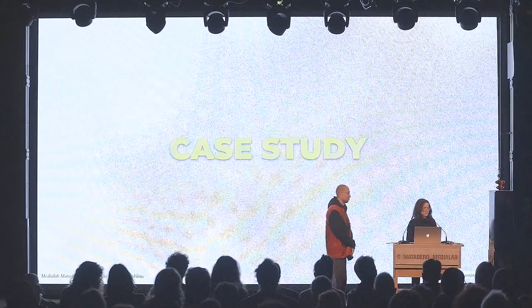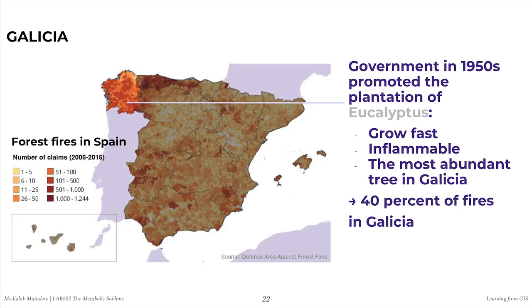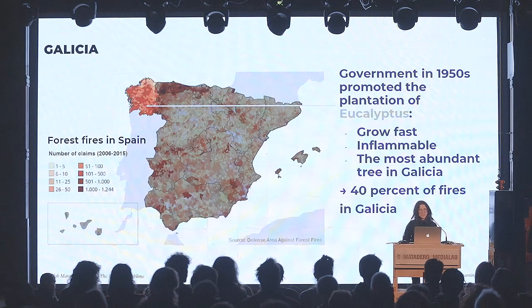As the case study, we chose Galicia, the Spanish region in the northwest, due to its high amount of monoculture and risk of wildfires. In the late 1950s, the central government started promoting the plantation of fast-growing tree species, and today Eucalyptus are the most abundant trees in Galicia. Planting Eucalyptus is convenient since plantations need little care and grow fast, but they are also highly inflammable.